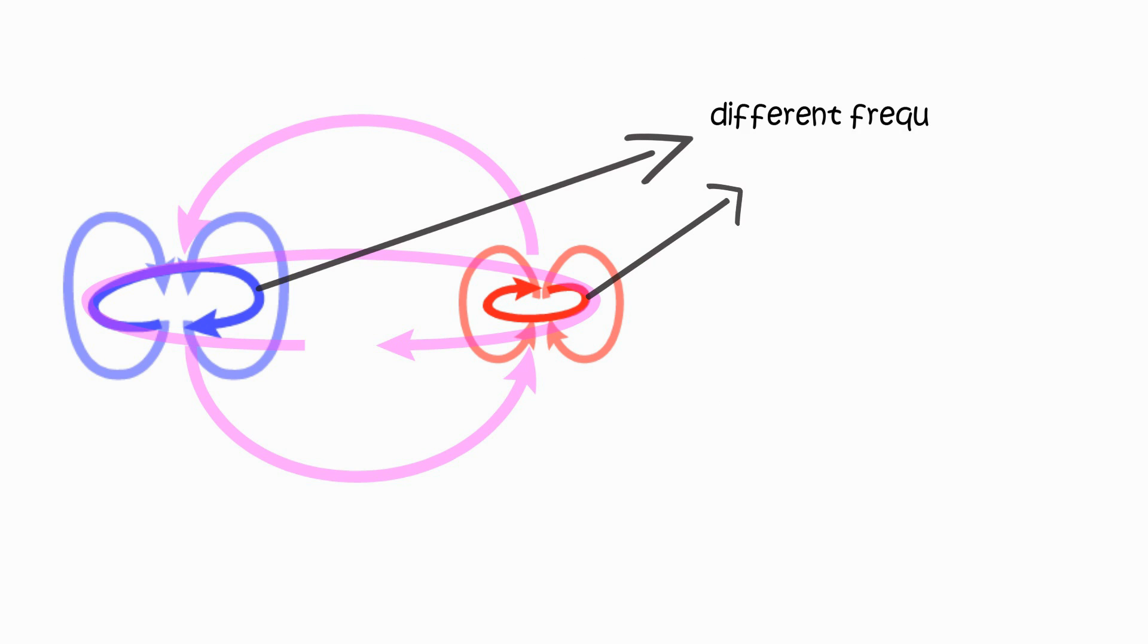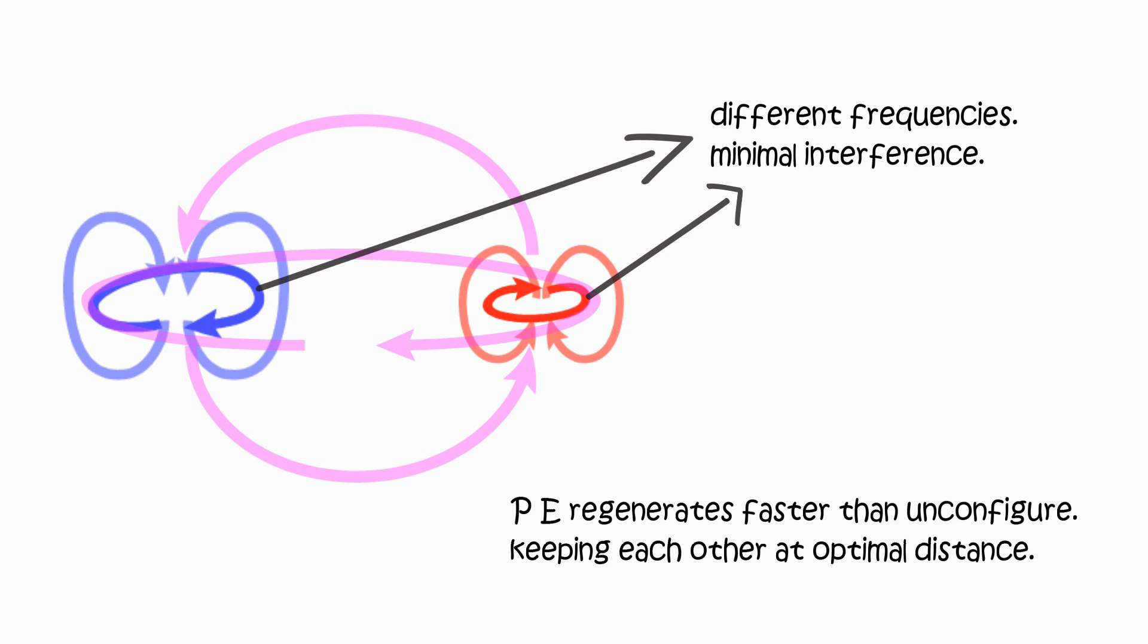Proton-electron connection adjusts optimal distance. Proton-electron have opposite frequencies, minimal interference. Proton-electron can easily regenerate faster than unconfiguring each other.